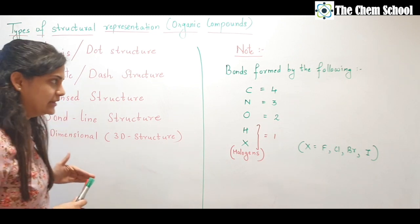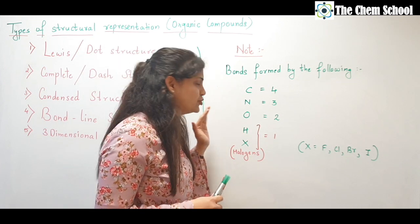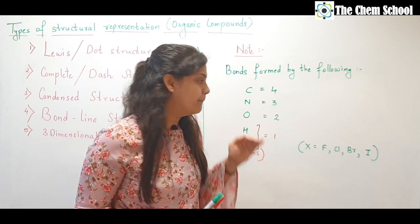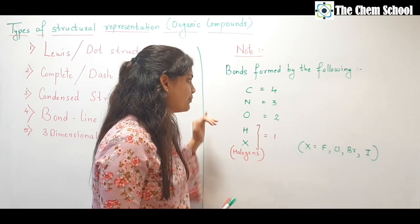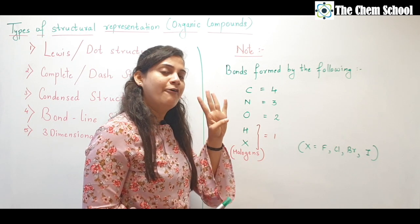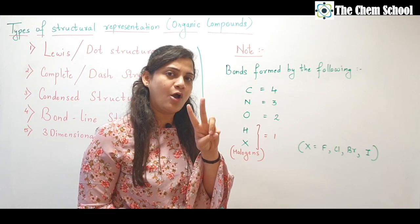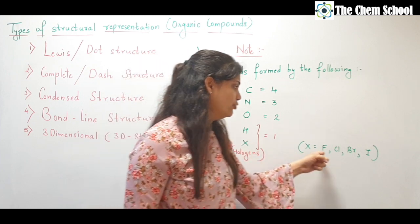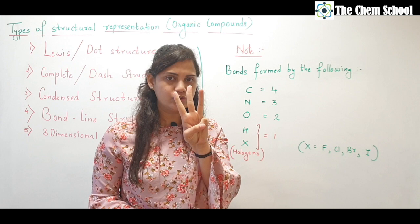Before we start elaborating, we need to remember some key points. Just remember the type of bond formed by each element, because they form the major organic compounds we are going to deal with. Remember: 4 bonds are formed by carbon, 3 by nitrogen, 2 by oxygen, and 1 by hydrogen and halogens — fluorine, chlorine, bromine, and iodine.